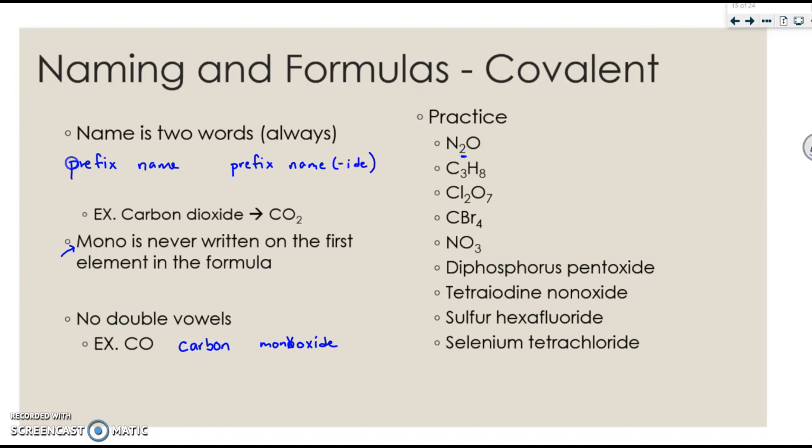So let's do a few of these problems. N2O. It's telling you there's two nitrogens. The prefix for two is di. So this is going to be dinitrogen. Then there's one oxygen, so it's going to be the prefix mono, but we don't double vowel it. So it's dinitrogen monoxide.